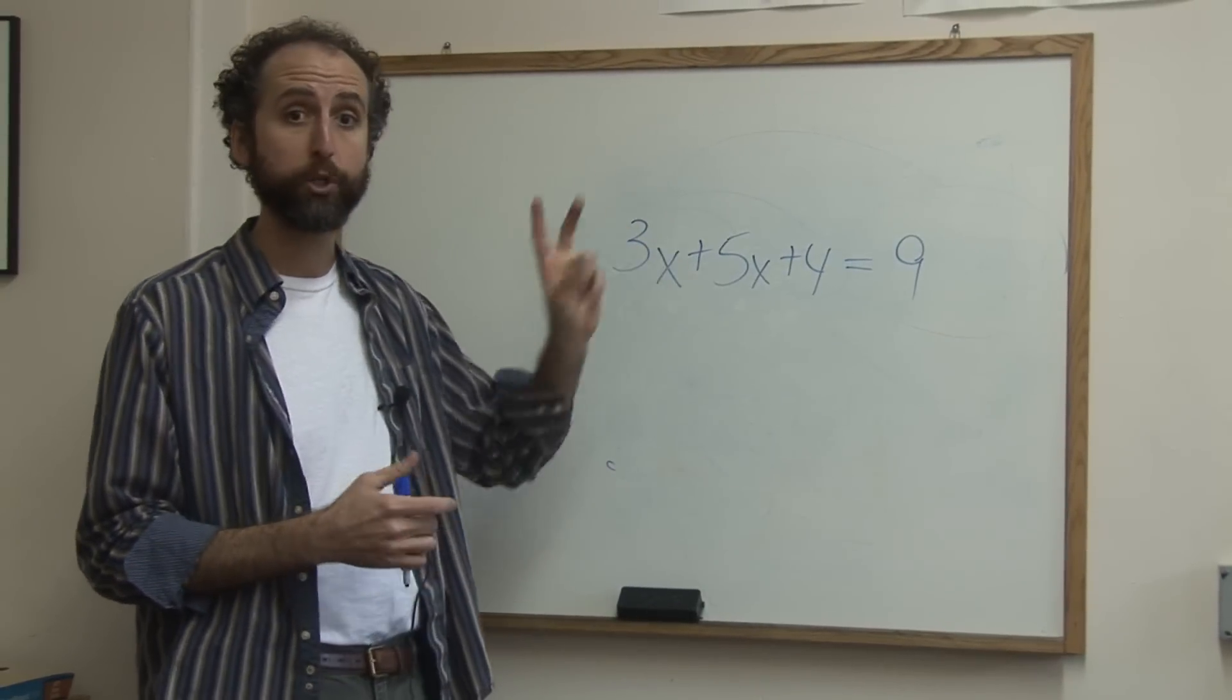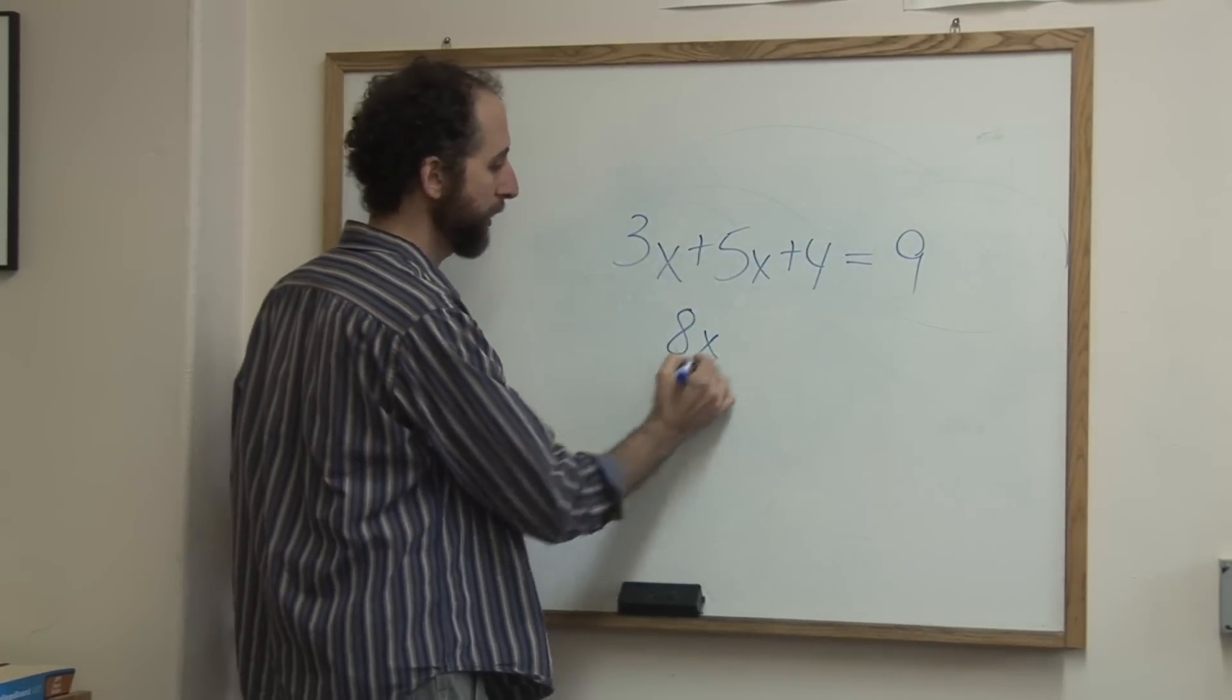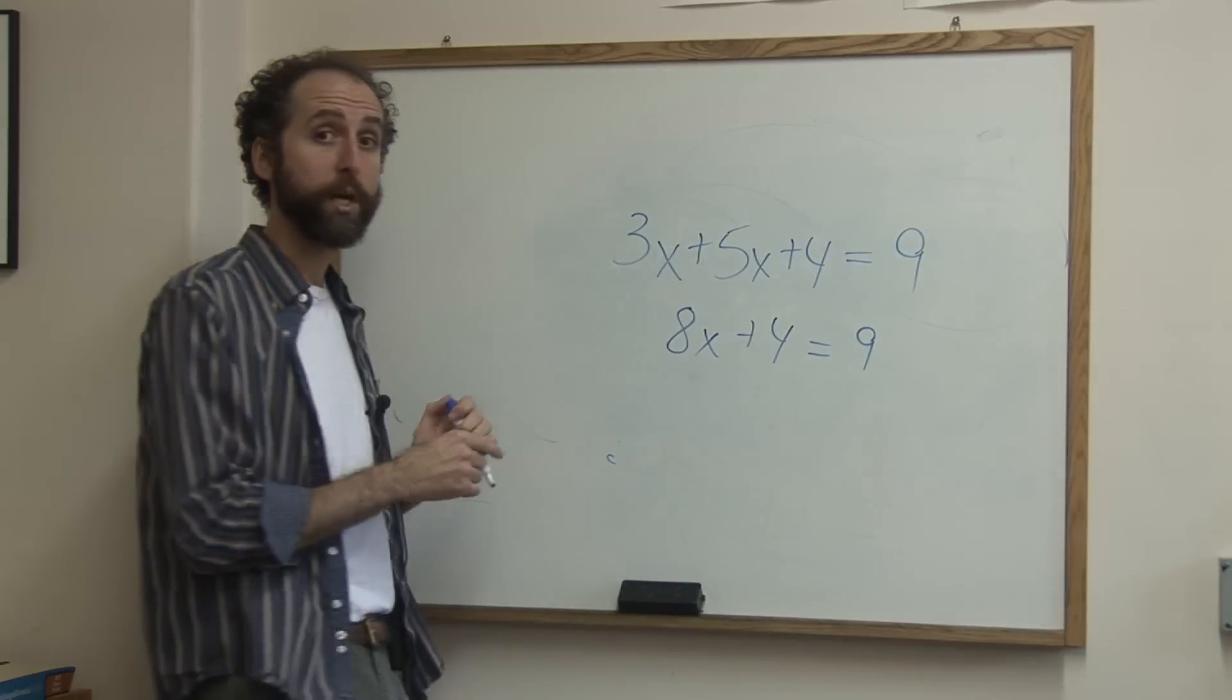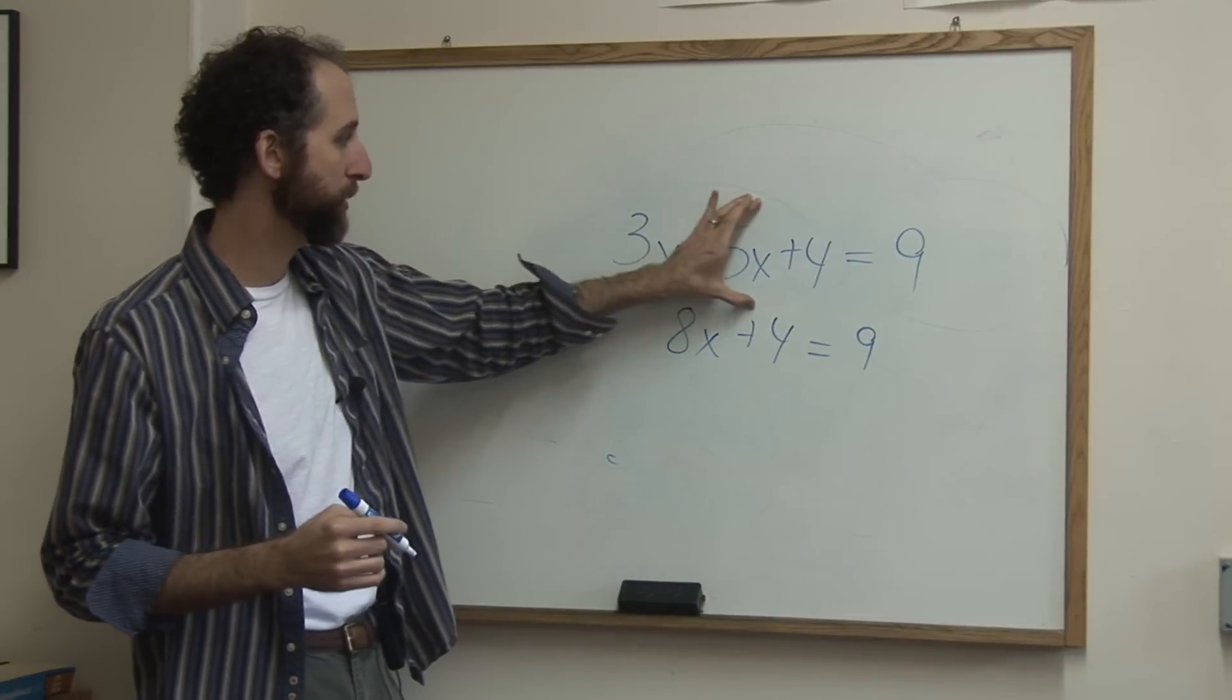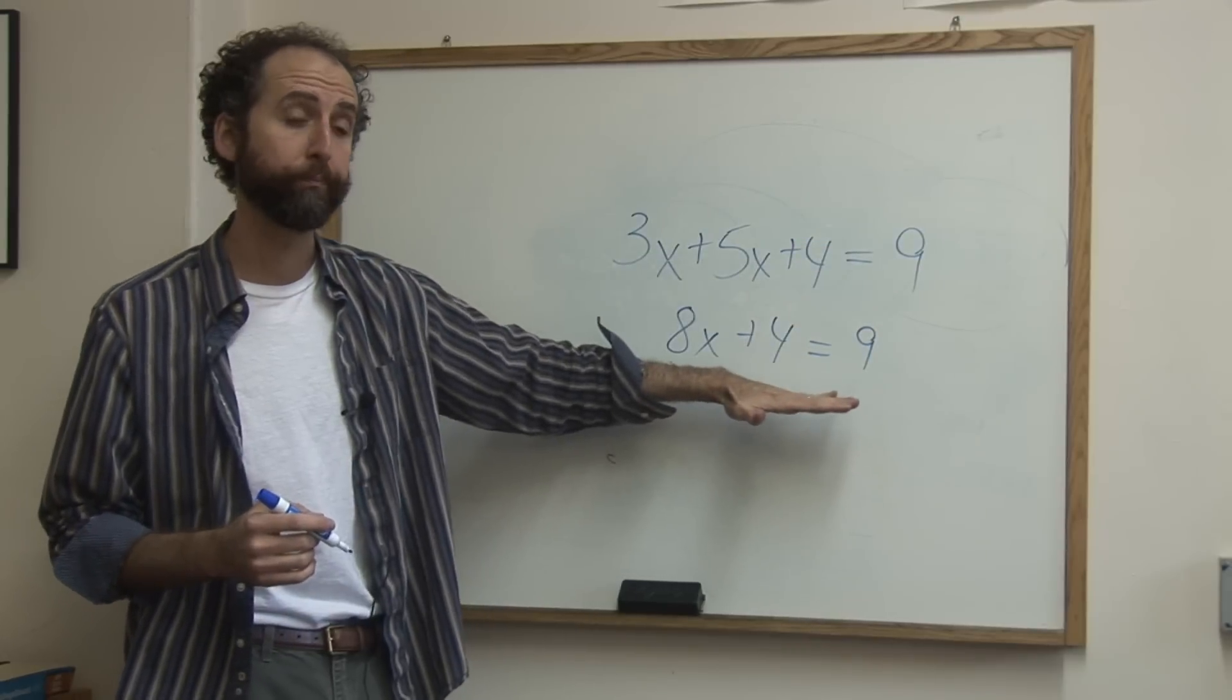If x was squared, there would be two answers. So we're going to add these up, 3x plus 5x is 8x, plus 4 equals 9. So what we did is step one, we combined like terms, 3x plus 5x is 8x. I didn't use these yet, so they dropped straight down.